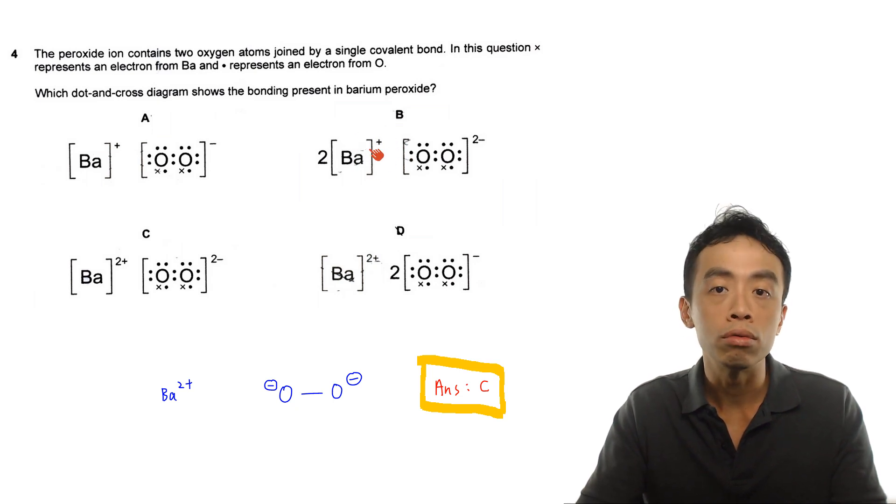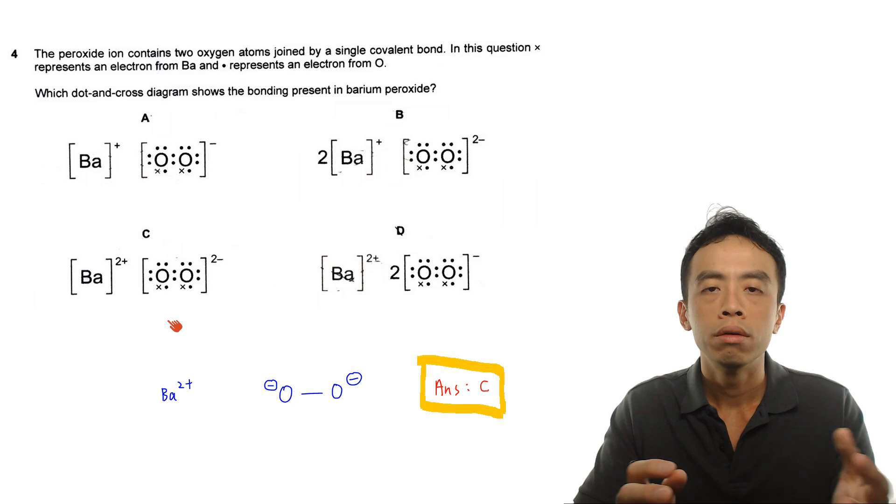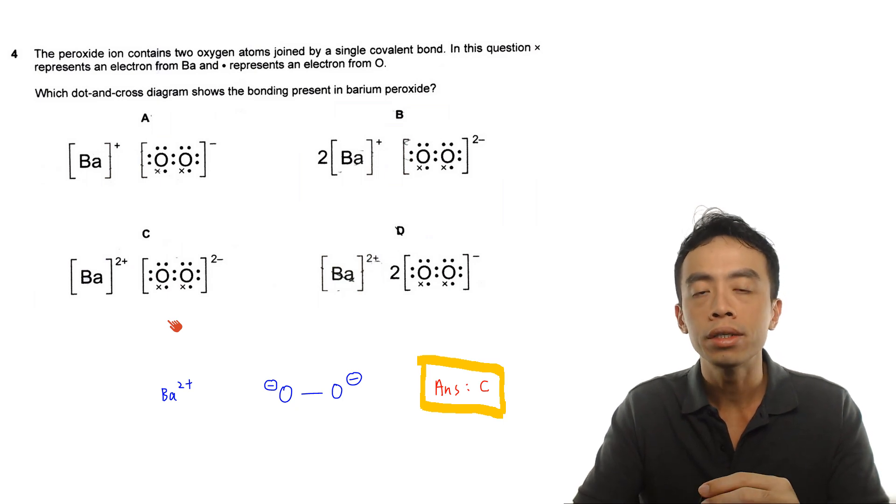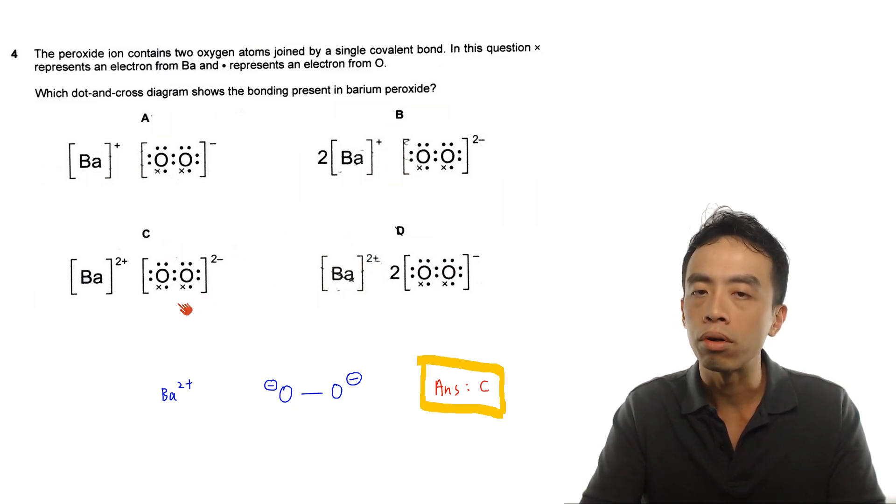So we will have to decide between options C and D, barium 2 plus and barium 2 plus. Now the next thing we will have to look at is peroxide. If I consider the differences between options C and D, option C, the peroxide, it is an overall minus 2 charge. Option D, it will be an overall minus 1 charge.